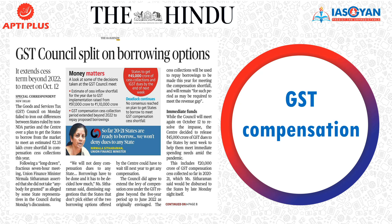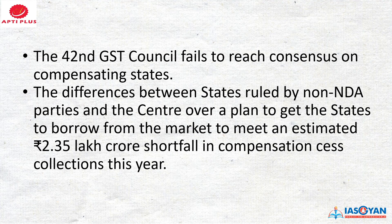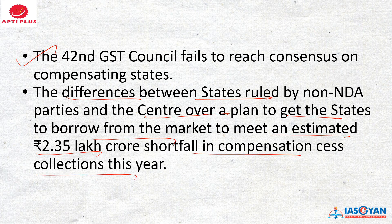Now coming to the other news, that is GST compensation. I had already discussed this news yesterday and said we would cover the outcome of the meeting. This would be important for General Studies Paper 3 and equally important for your prelims examination. The 42nd GST Council meeting has failed to reach any consensus on compensating the states, as the demand of the states has long been pending — almost a year and a half. The difference is between states ruled by non-NDA parties and the Centre over the plan to have states borrow the amount. Kerala has completely denied the Centre's proposal. The estimation is around 2.3 lakh crore in the shortfall of the compensation to be collected this year.